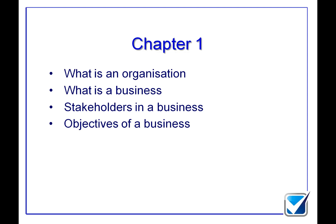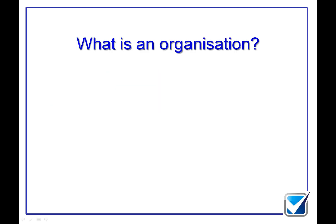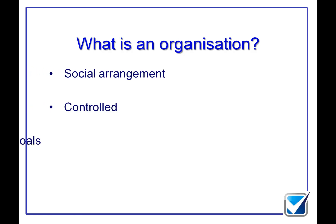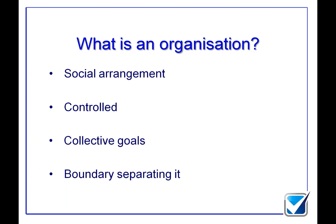As a generic overview of an organisation, an organisation has got four key elements. Remember, what we're looking at here is multi-choice questions as the norm, so as soon as I say there's four things here, that means you've got the potential for a multi-choice question on this. We're looking at a social arrangement which is controlled somehow, collective goals for everybody within this social arrangement, and a boundary separating those within the arrangement and those outside.